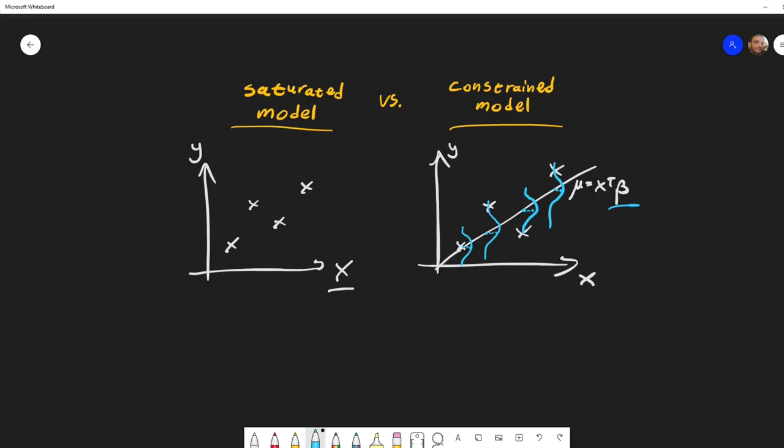Basically, to get this point over here, this x, then under the assumption that the mean is here, there is some likelihood, there is some probability that we get a point here.